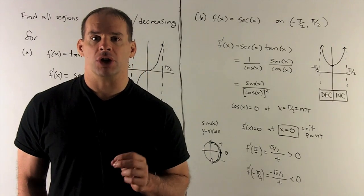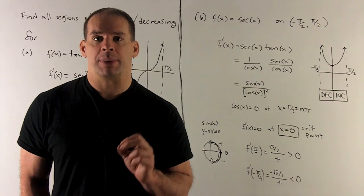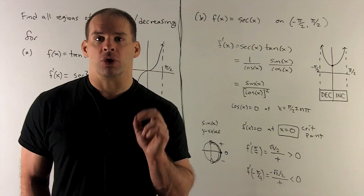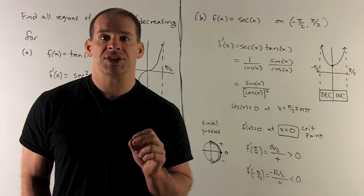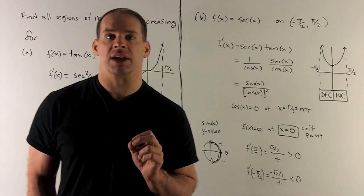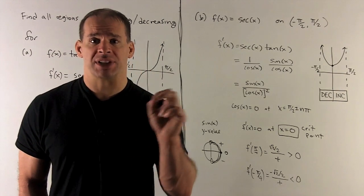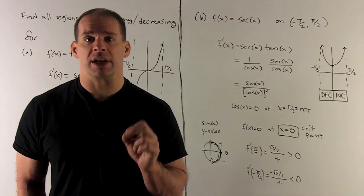For our next function, f of x equals secant x on the interval minus pi halves to pi halves. So first, I'm going to look for critical points. So I'm going to take the derivative. Derivative of secant x is secant x tan x. I can rewrite that as 1 over cosine times sine over cosine. So we're looking at sine of x over cosine squared x.